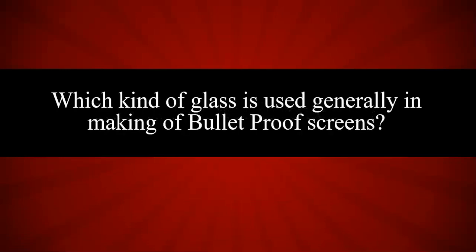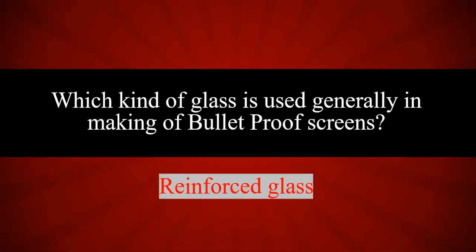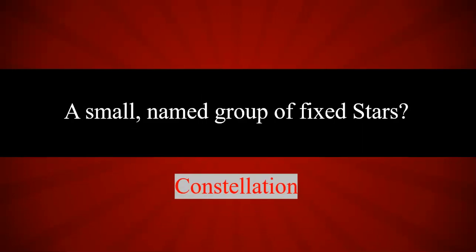Which kind of glass is used generally in making of bulletproof screens? Reinforced glass. A small named group of fixed stars is called a Constellation.